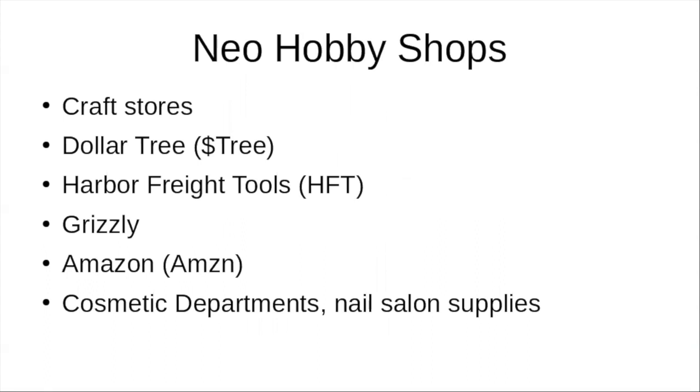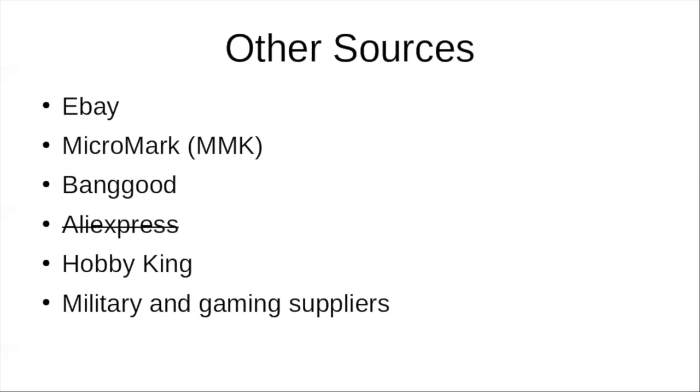Hobby shops are going away. So I now have this list of neo-hobby shops: craft stores, Dollar Tree, Harbor Freight, Grizzly Tools, Amazon, and the cosmetic departments. A lot of these tips come from the cosmetics department. Some other sources are eBay, Micromark. Don't forget, Micromark has a partner's program discount of 15%. That 15% also applies to their sales prices.